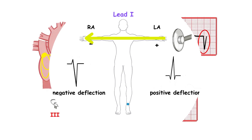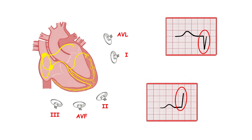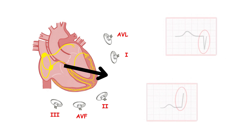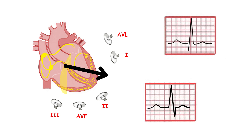Then the following major vector is going to be a result of the combination of the vectors of depolarization conducted through the anterior and the posterior fascicle. The net result, the net vector, is pointed downward and to the left, which actually corresponds to the electrical axis of the heart.